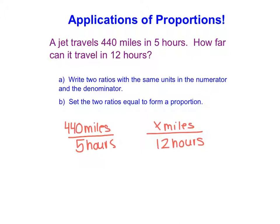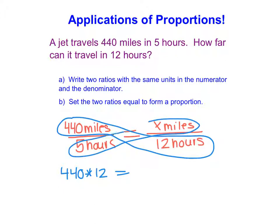And once we've written our two ratios, we set these two ratios equal to form a proportion because this is a proportional situation. Now, here's where we utilize the cross-product strategy because it's a really quick way to figure out that missing variable piece. We can figure out how many miles we could actually travel in 12 hours. So we're going to multiply numerator times denominator equals numerator times other denominator.